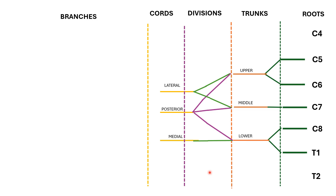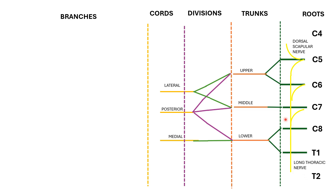Now let's see the branches. From the roots, C5 gives the dorsal scapular nerve, and C5, C6 and C7 give the long thoracic nerve. Among the trunks, only the upper trunk gives branches: the suprascapular nerve and the nerve to subclavius. The middle and lower trunks do not give any branches. The divisions also do not form any branches.